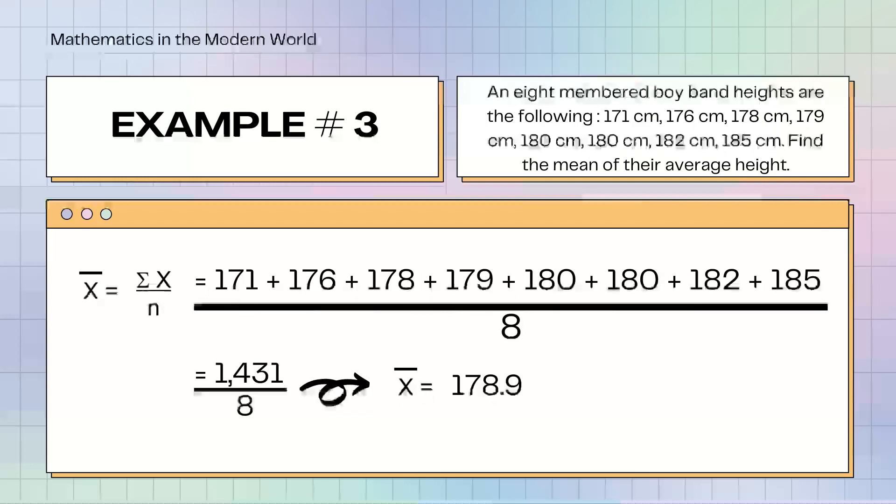Example number 3. An 8-membered boy band heights are the following: 171, 176, 178, 179, 180, 180, 182, 185. Find the mean of their average height. I-add natin yung mga heights nila at i-divide sa 8. It will be 1,431 over 8. Therefore, the mean of their average height will be 178.9.